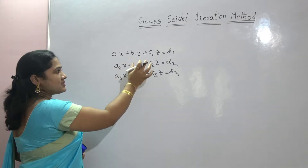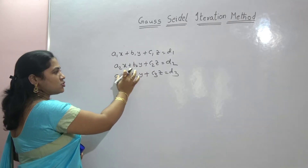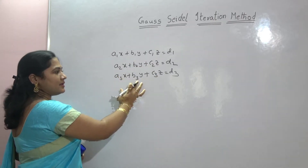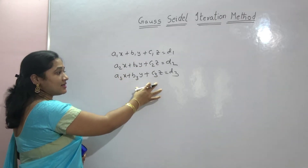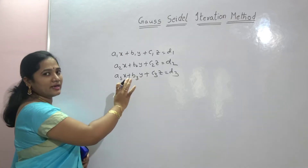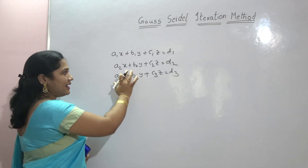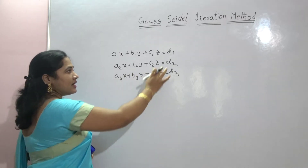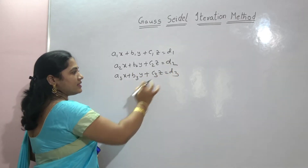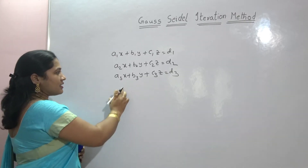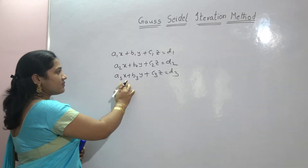Here a1, b1, c1, a2, b2, c2, a3, b3, c3 are the coefficients of x, y and z, and x, y, z are the unknowns. d1, d2, d3 are the constants.